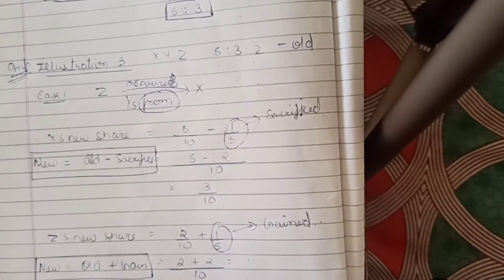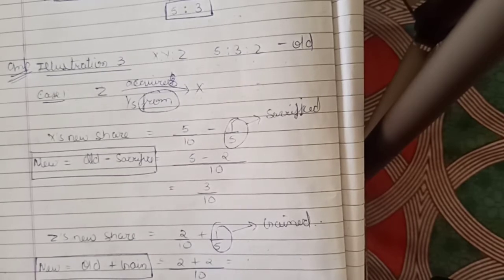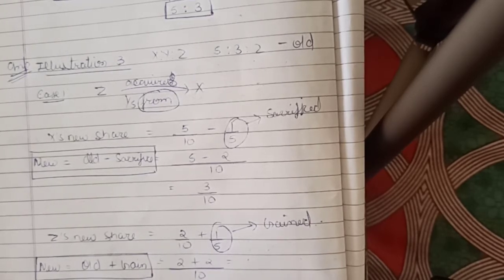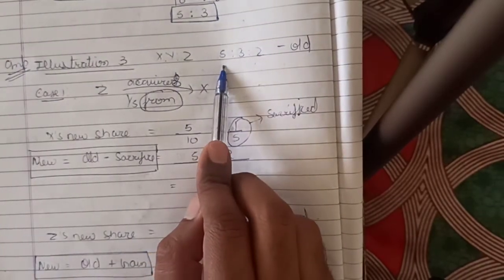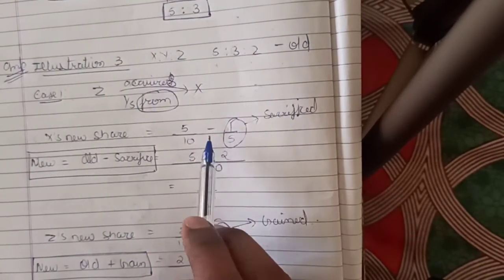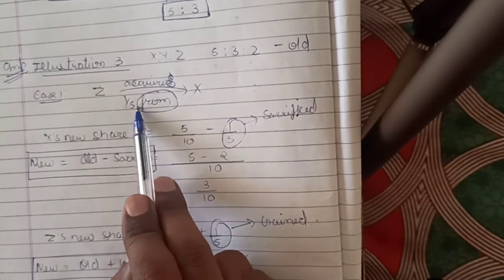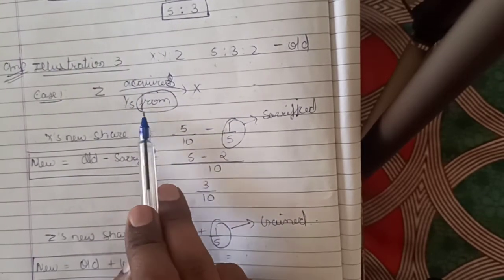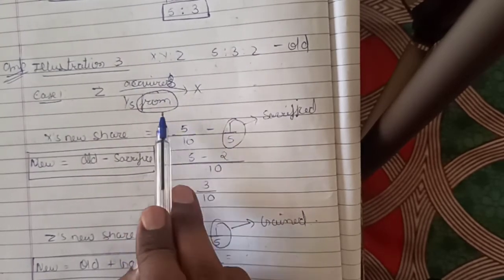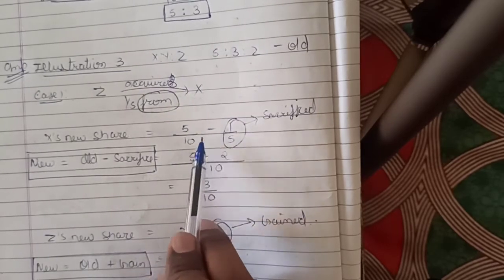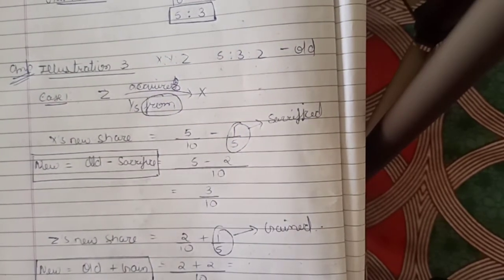Suppose you are having 5 chocolates, and one chocolate is taken by your brother. So what you will do? 5 minus 1 equals 4. So here also we have to do the same. Z is having the share of 5/10. When the word 'from' comes, we will use minus — we will subtract. So 1/5 is taken by Z, and we subtract 1/5, getting 5 minus 2 upon 10.